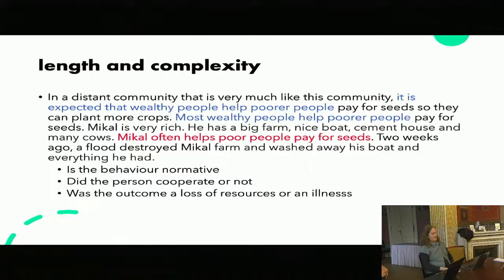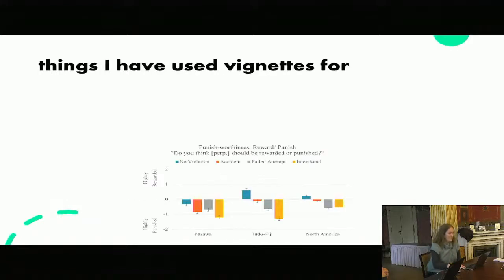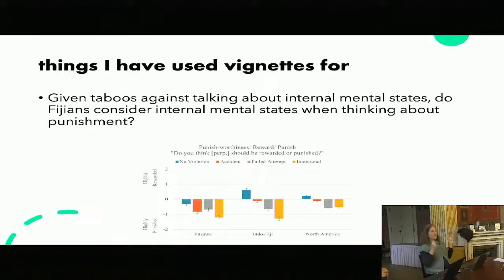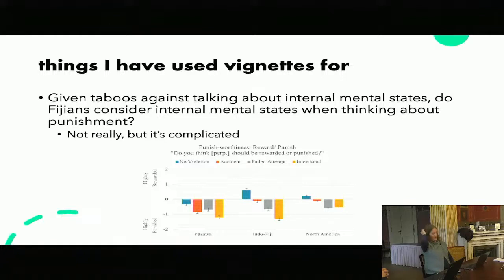I thought I would give some examples of stuff we've done with vignettes. This is a set of things we did in Fiji — something I did with Rita McNamara, who was the lead on this. In Fiji, there are opacity of mind norms — it's rude to think about other people's mental states. We wanted to know if Fijians consider the internal mental states of others when thinking about punishment. And the answer — like most research of this type — is no, but it's really complicated.